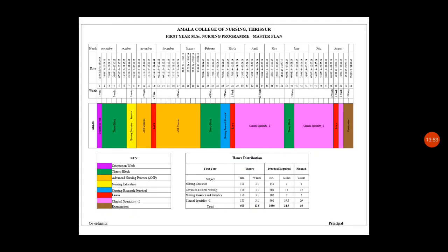The correlation chart displays months, dates, weeks, and areas, with keys provided in the lower portion. It shows the hours distribution for each subject and practicals, all explained within a single sheet of paper in pictorial form with color representations and blocks indicating each student activity. The remaining elements of organization of learning experiences will be discussed in the next class.